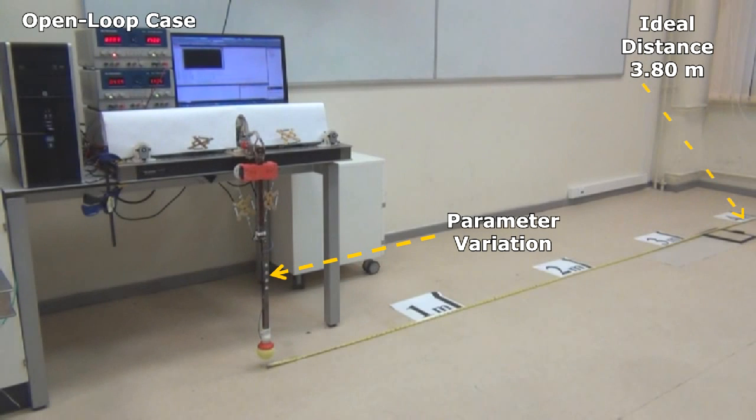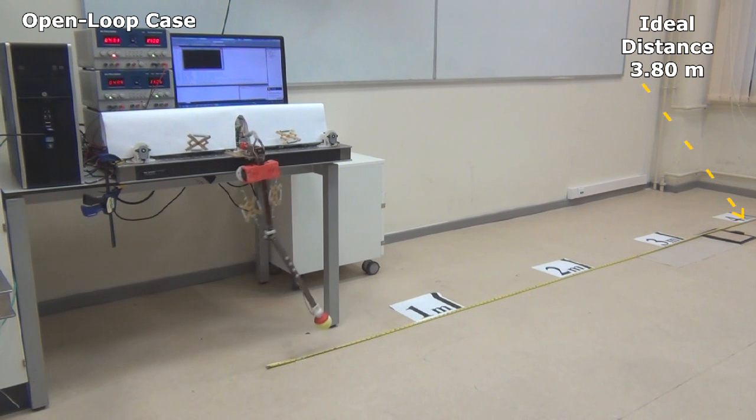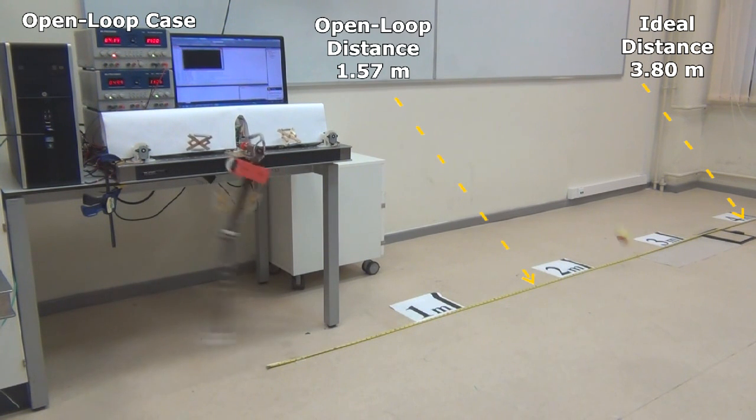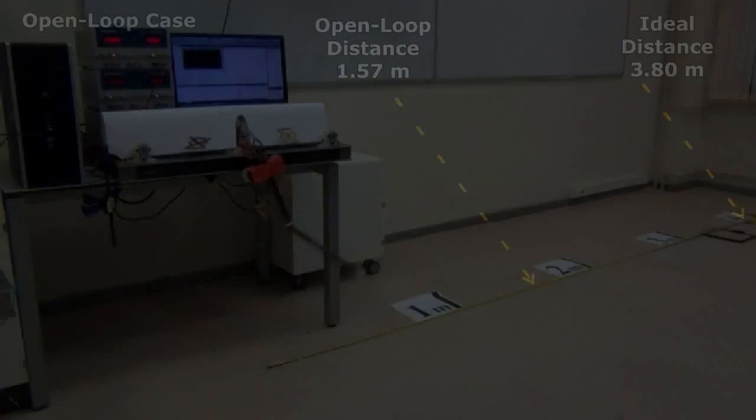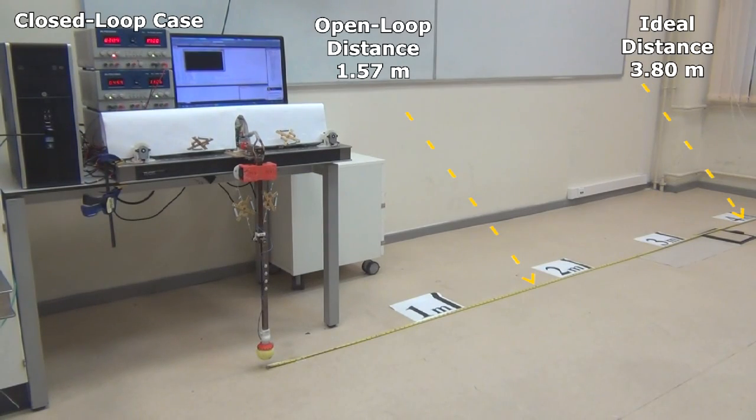Throwing experiments were also conducted under parameter uncertainty. Additional mass, which is not taken into account for control system development, is added to the second link. In this case, the open-loop distance is 1.57 meters, whereas the closed-loop distance is 2.71 meters.